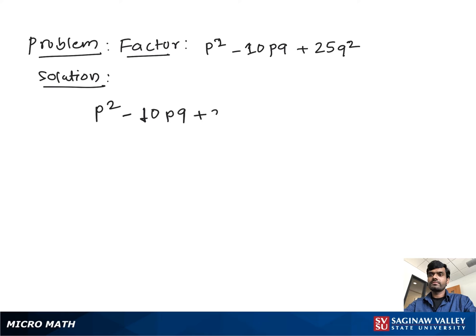First we multiply the coefficient of P square, 1, with the coefficient of Q square, 25. Then we take out the factors of 25, which are 1 and 25, and negative 5 and negative 5.